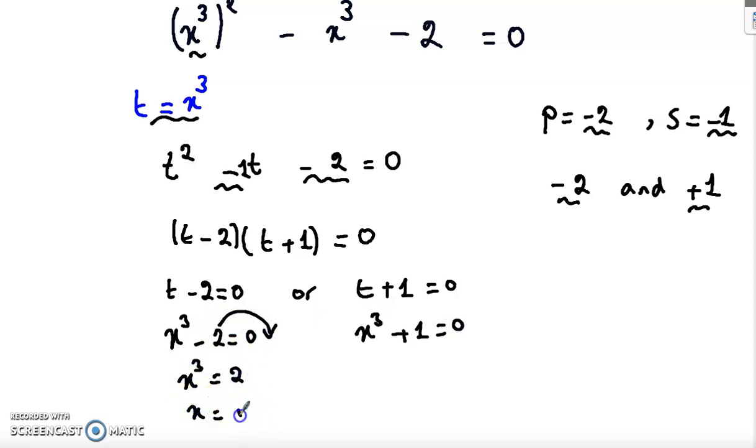Now for this equation, note that it's a cubic equation so it must have three solutions. x cubed plus 1 equals 0, so it's of the form a cubed plus b cubed.